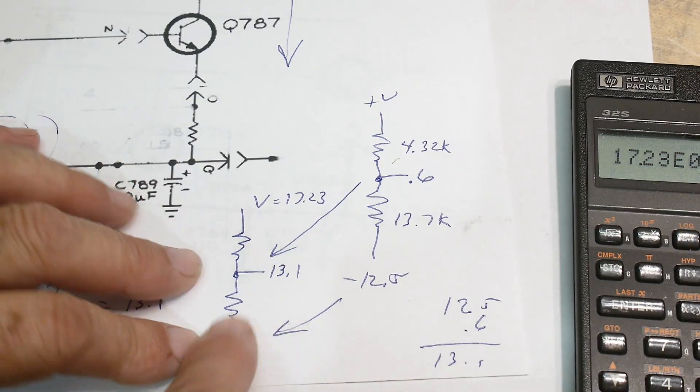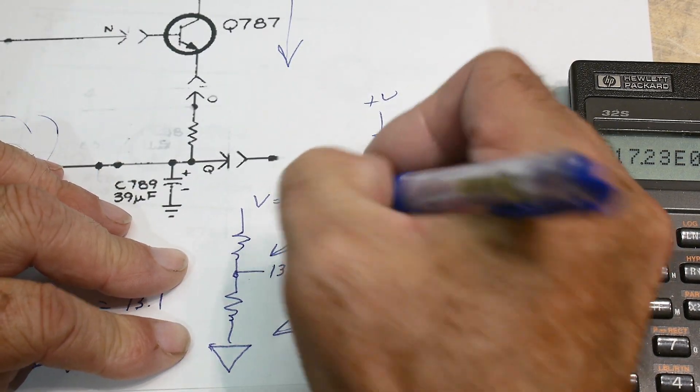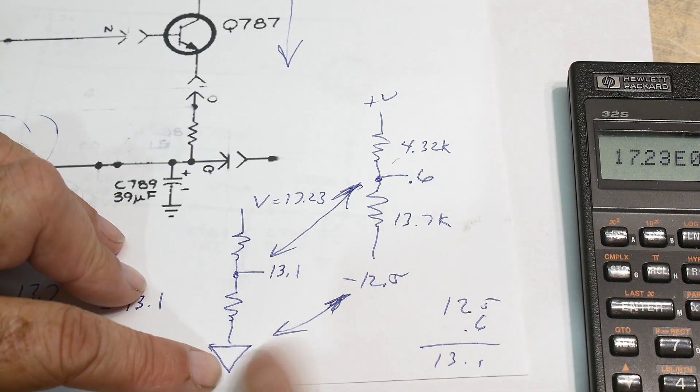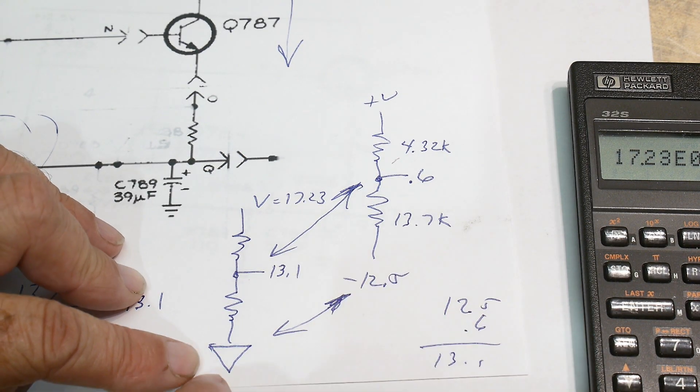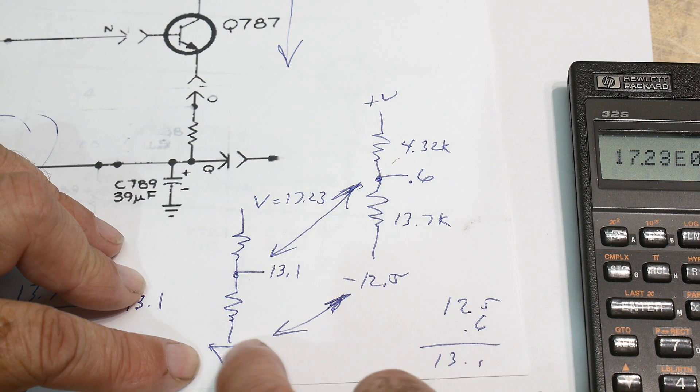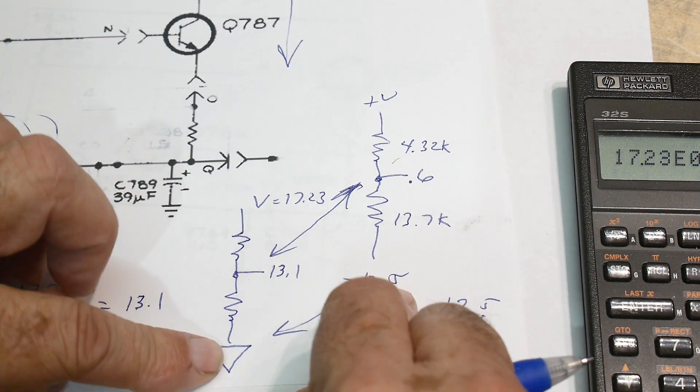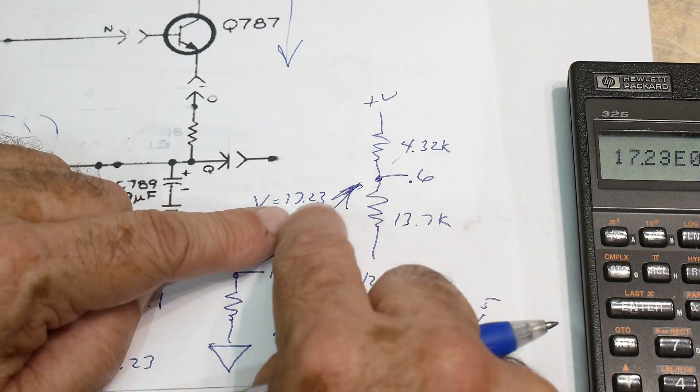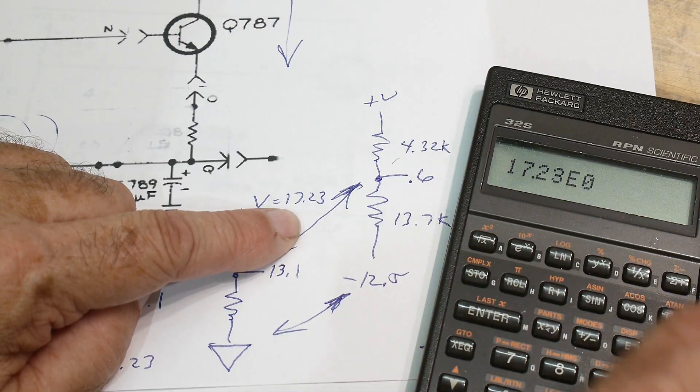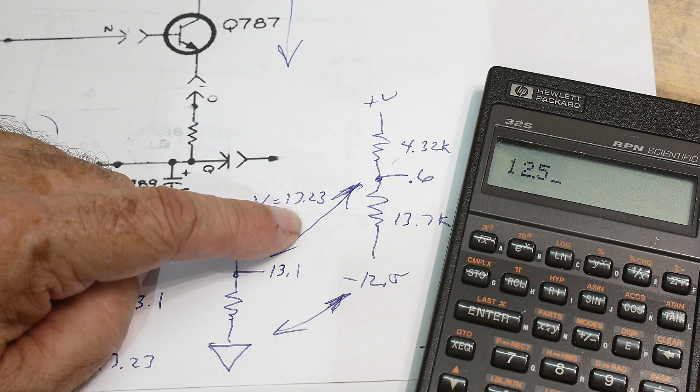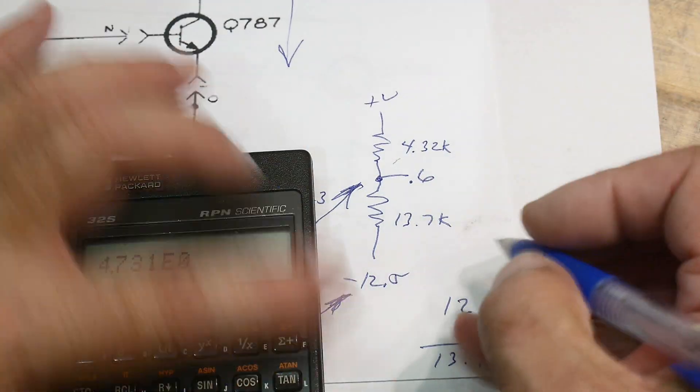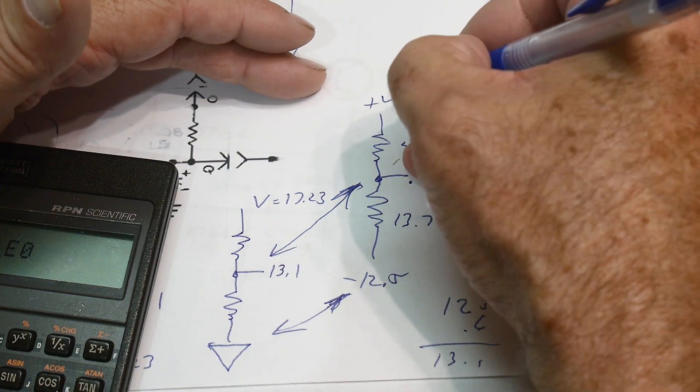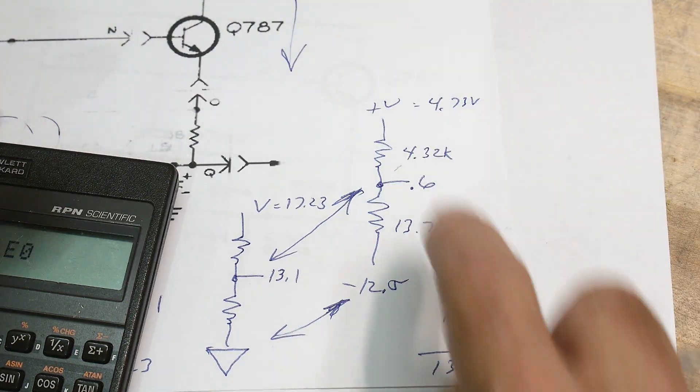Now we want to go this direction - we want to move it back this direction. So we're going to have to subtract 12 and a half from everything. We subtract 12 and a half, we get zero. We take zero, we subtract 12 and a half, we get minus 12 and a half. We take 13.1, we subtract 12 and a half, we get 0.6. And we take 17.23 and we subtract 12.5 and we get 4.73 volts.